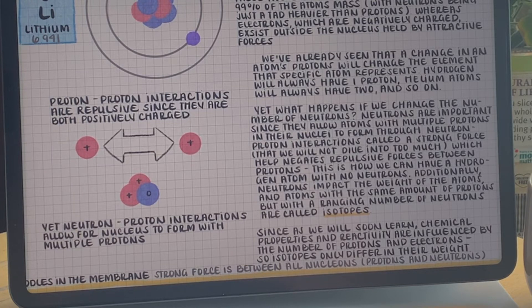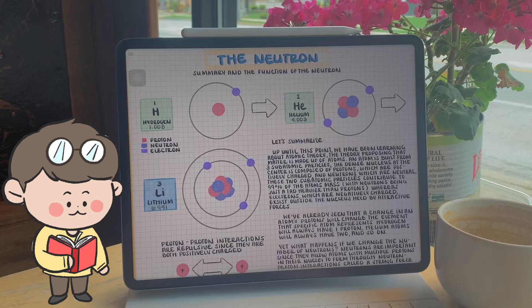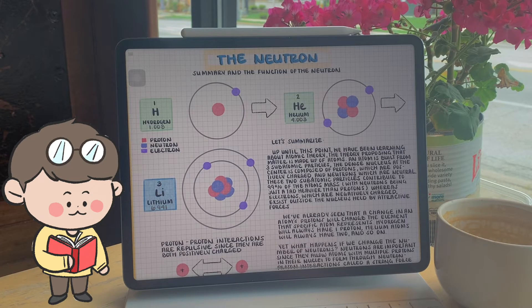Through neutron-proton interactions called a strong force, which help negate the repulsive forces between two protons. This is how we can have a hydrogen atom with no neutrons. It's the only exception. Additionally, neutrons impact the weight of the atom.